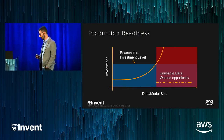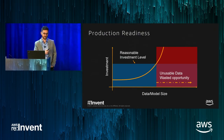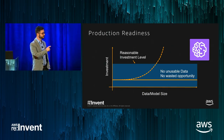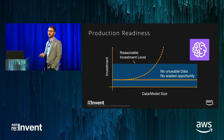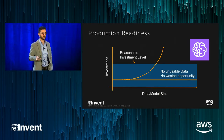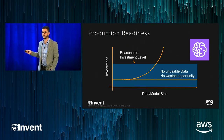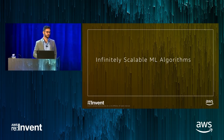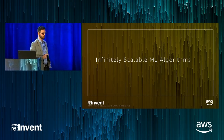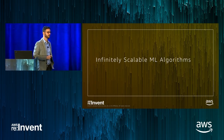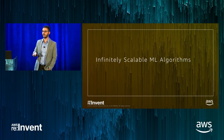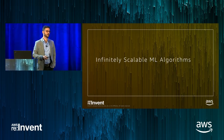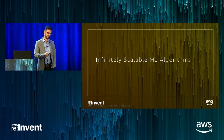What you get is a production-ready environment — not only from the algorithms but also from SageMaker — that once it runs, it just runs. If it ran on a gigabyte of data, it will run on a terabyte, on 100 terabytes. Let's go into the actual algorithms available in SageMaker today.